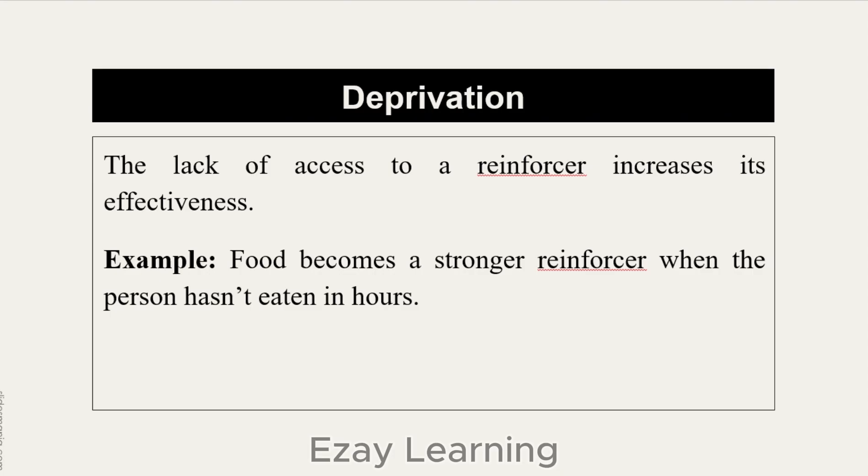Deprivation: as the name indicates, deprivation means lack — the lack of access to a reinforcer increases its effectiveness. For example, if you have a client and chocolate is a reinforcer, you ask the parents not to give the child chocolate at home. This way, the value of chocolate increases for the client and the effectiveness of the reinforcement increases. Example: food becomes a stronger reinforcer when a person has not eaten in hours. When you are hungry, you value the food more; if you are already full, you won't value food as much.